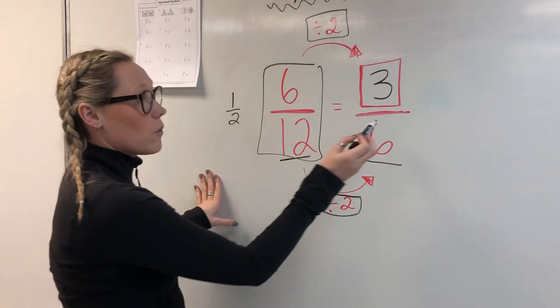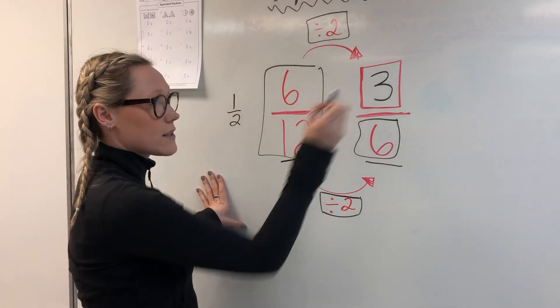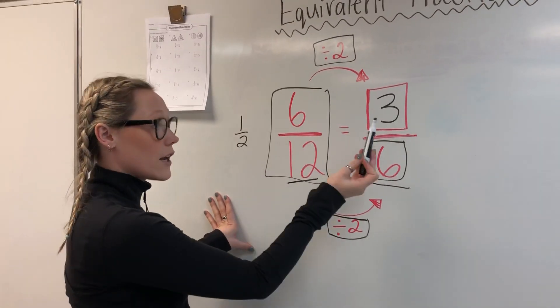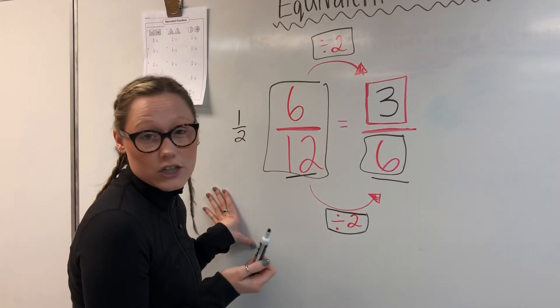Now this even helps me without even dividing or multiplying, because what is half of 6? Well, half of 6 is 3. So that's how I know that is an equivalent fraction.